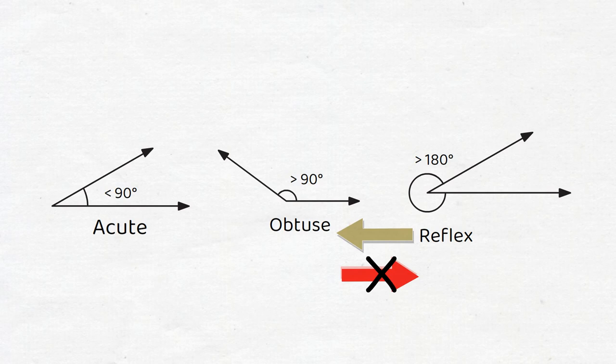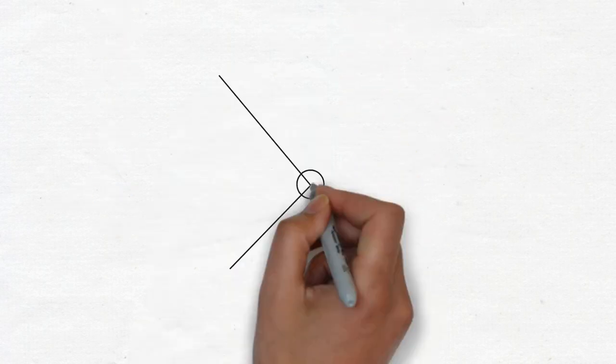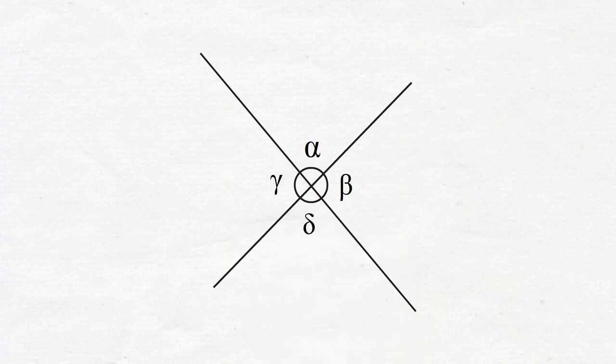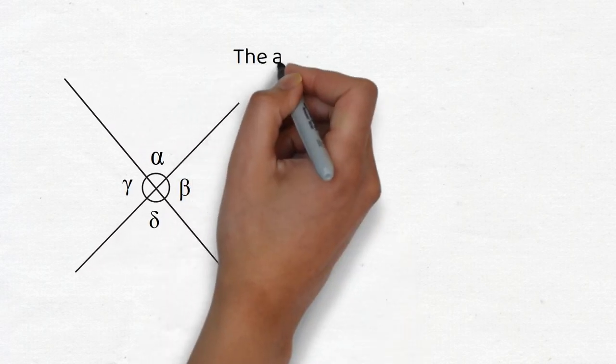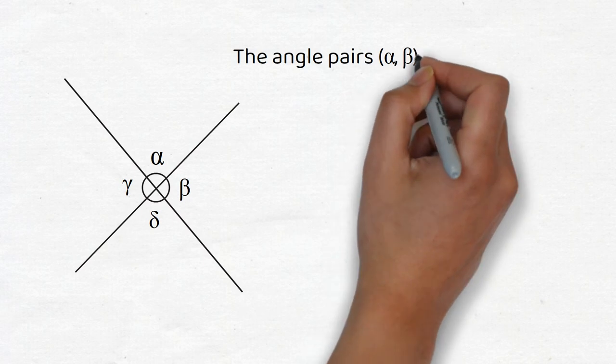Angles formed by intersecting lines. Let's say that we have two intersecting lines, and we'll call the four angles alpha, beta, gamma,